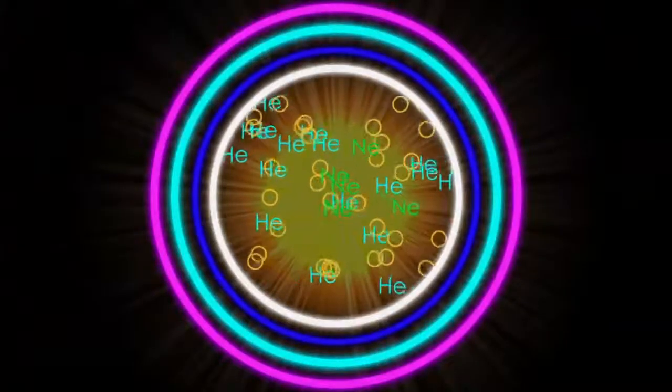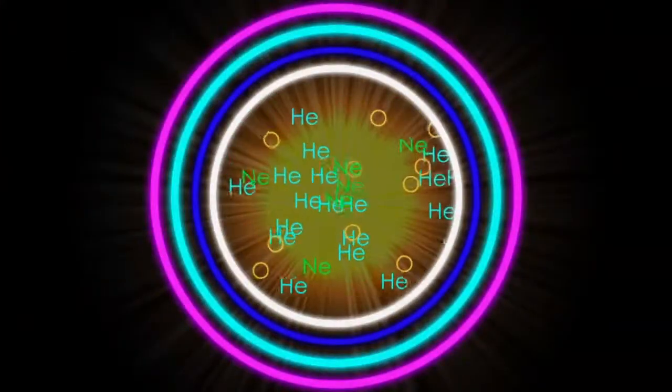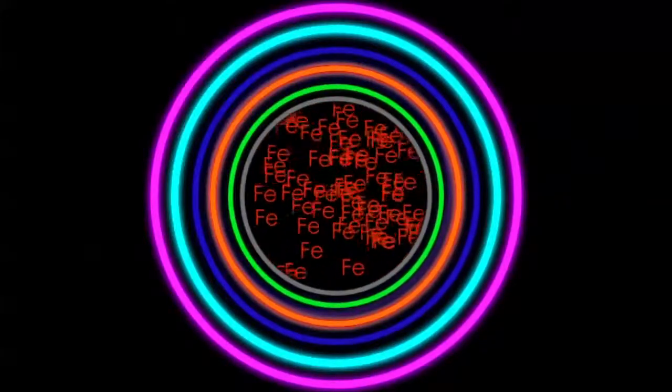Depending on the size of the star, this process can continue through the periodic table up to the point where iron is formed. But to fuse iron, you need to input energy. With energy going into fusion instead of coming out of it, the star can never be in equilibrium again, and its days are numbered.